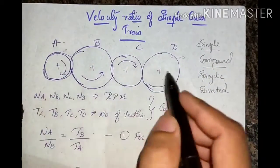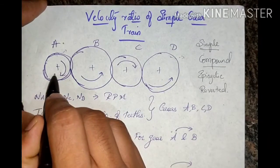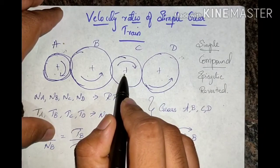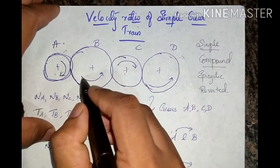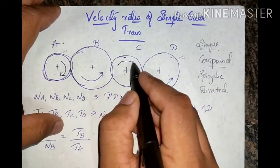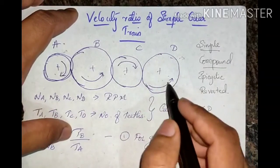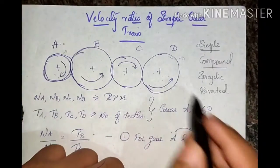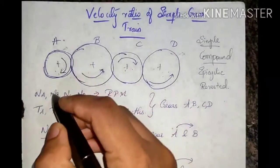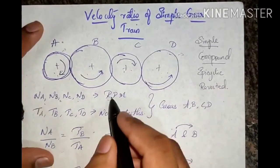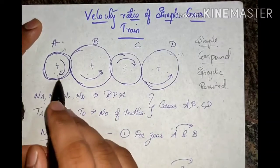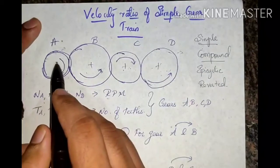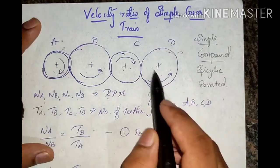In a simple gear train, gear A is the driving gear and gear D is the driven gear. Gears B and C act as intermediate gears. A rotates in one direction, B rotates in the opposite direction, C rotates opposite to B, and D rotates opposite to C. So A and D rotate in opposite directions to each other. NA, NB, NC, and ND are the revolutions per minute for gears A, B, C, and D respectively.